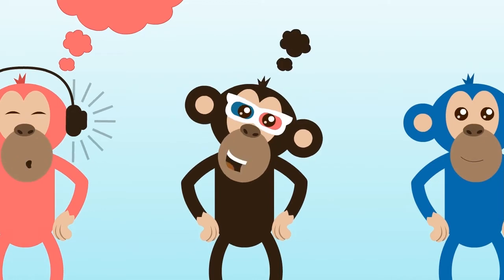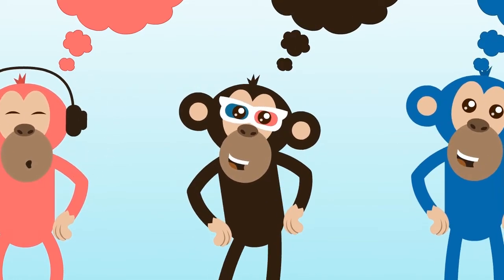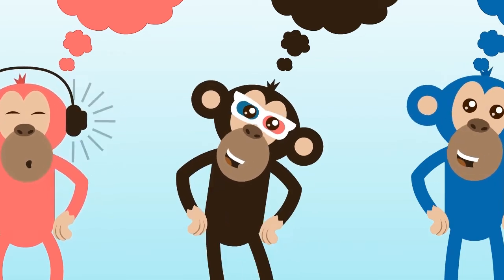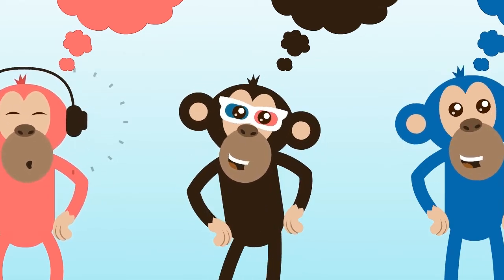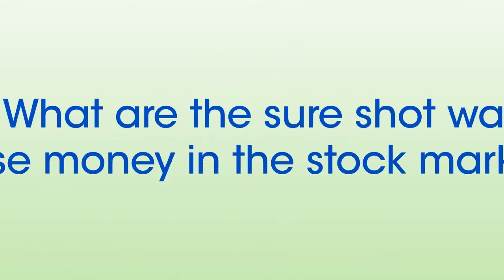I will hear evil, I will see evil, I will talk evil. Look at the three evil monkeys. If you follow their advice, then it is a sure shot formula to make your life unhappy. Sometimes the best way to solve a problem is to invert it and solve it backwards. What are the sure shot ways to lose money in the stock market?